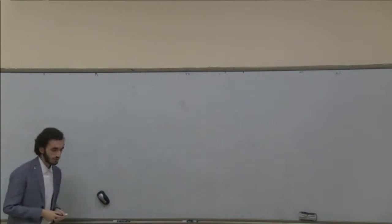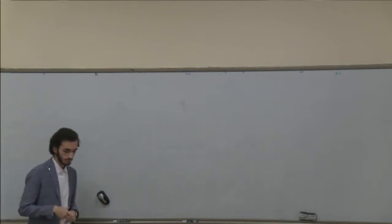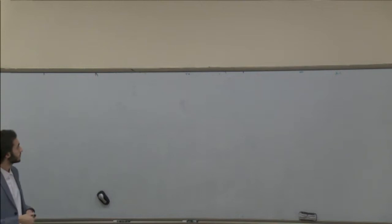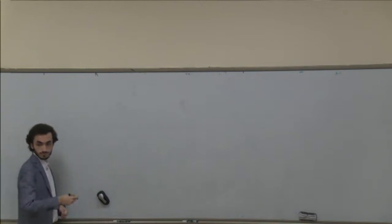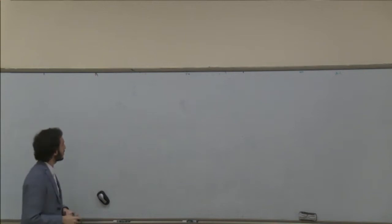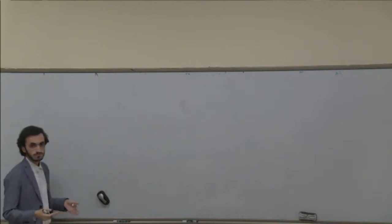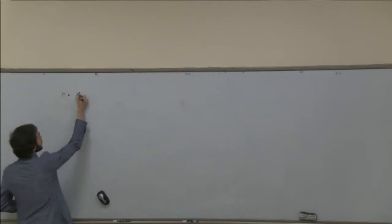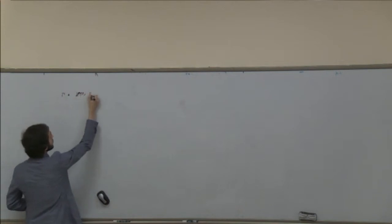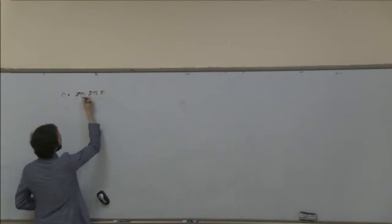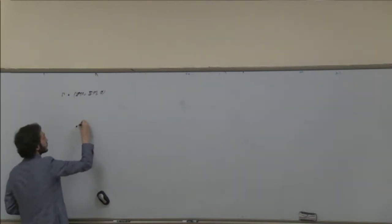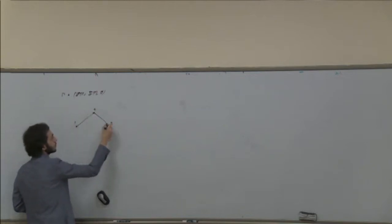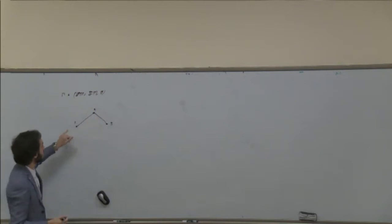I will first assume that you have some knowledge of graphs. As you've seen from the title, this is about a tree. So the question is: what is a tree? A tree is a graph with a unique path between every pair of vertices. We have gamma with a vertex set, an edge set, and a relation. In this tree, between every pair of vertices there is only one path.